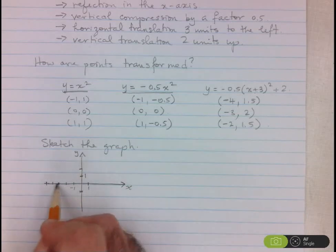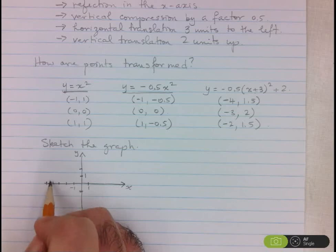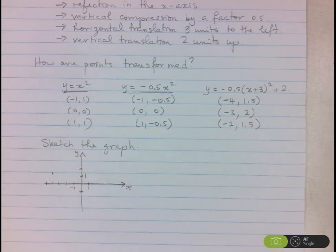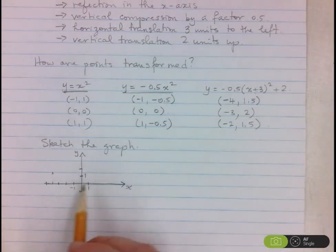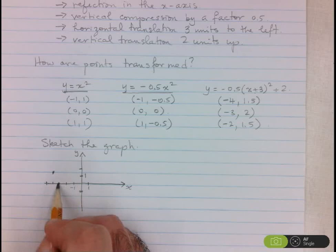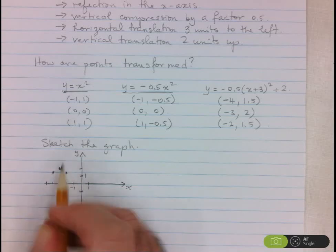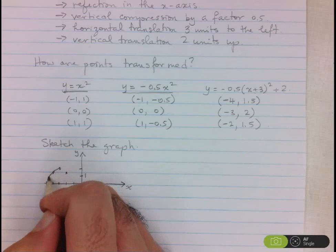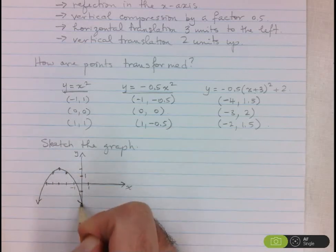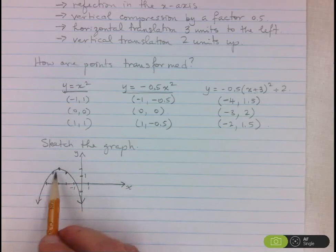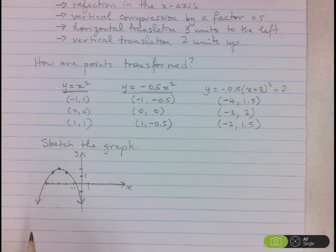And now we can graph. So we've got negative 4 and 1.5. Then we've got negative 3 and 2. And then we've got negative 2 and 1.5. And when we draw the graph, we see that it's a fairly wide graph. And there we go. And these 3 points alone are enough to give us a decent graph. That's it for now.